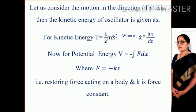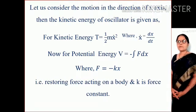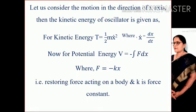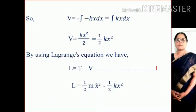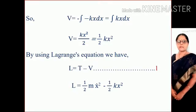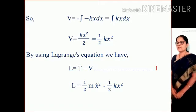Potential energy V equals minus the integration of f dx, where f equals minus kx — that is, the restoring force acting on a body and k is the force constant. So V equals the integration of kx dx. Since the integral of x dx equals x²/2, the potential energy is V = kx²/2.